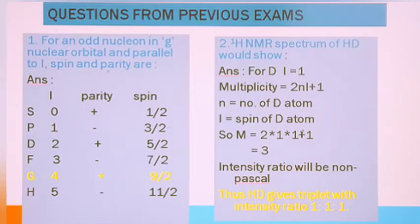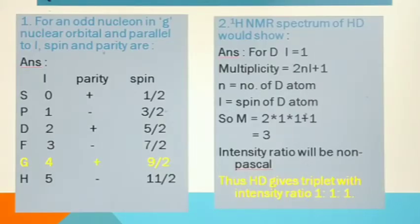Second question: they are asking about the NMR spectrum. When we're talking about NMR spectrum, they'll ask about multiplicity. You know the multiplicity formula: 2NI plus 1. For deuterium, we have I value equal to 1, from there you can calculate their multiplicity as N is the number of D atoms and I is the spin of D atom. So we'll get the answer 3. It will be non-Pascal, and HD will show triplet with intensity ratio equal to 1:1:1.